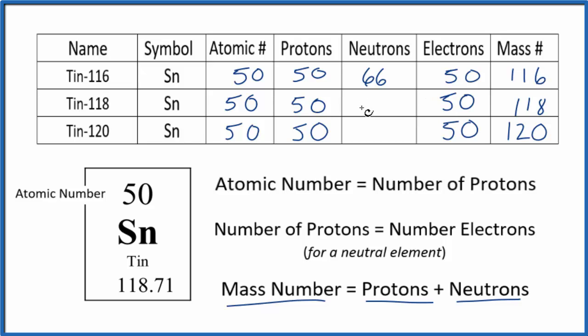Here, 50 plus 68, that's 118. And then 70, here for tin-120. So we figured out the neutrons based on the mass number.